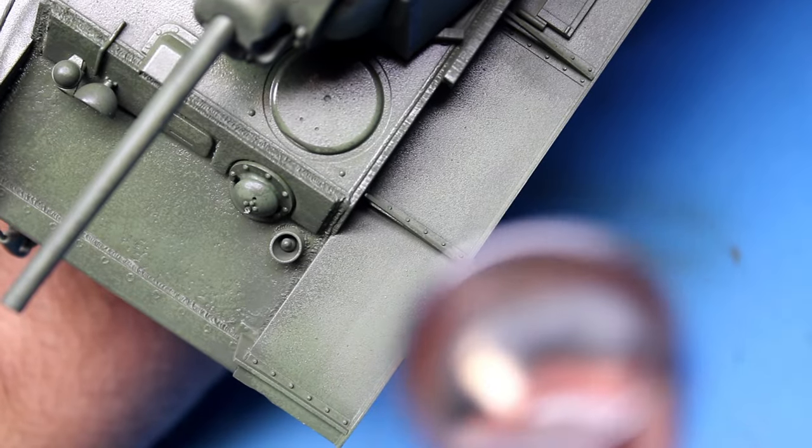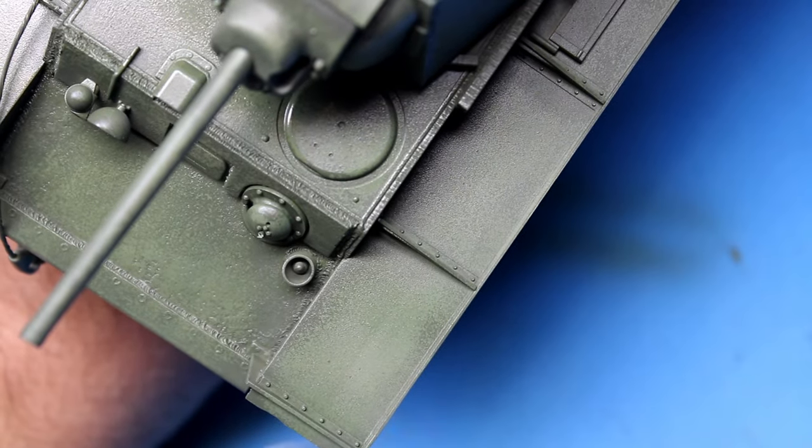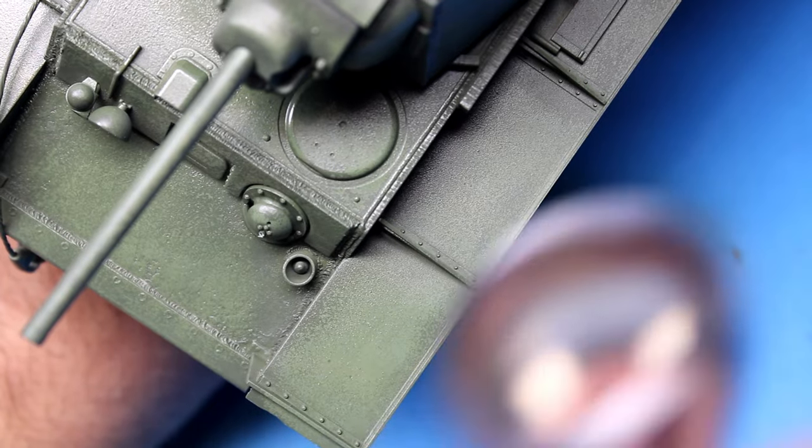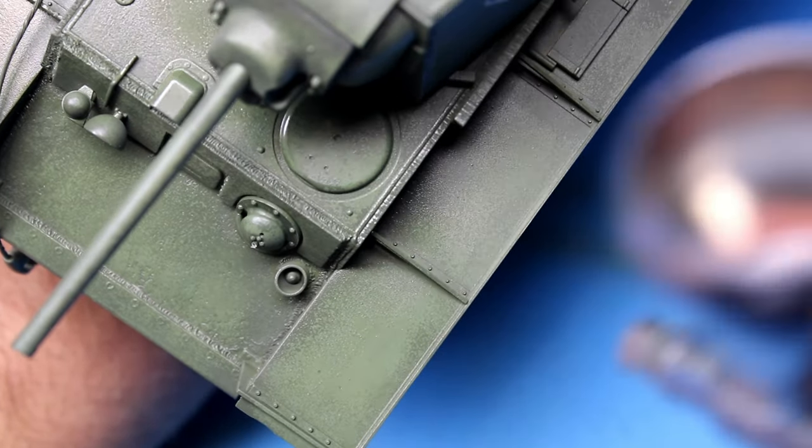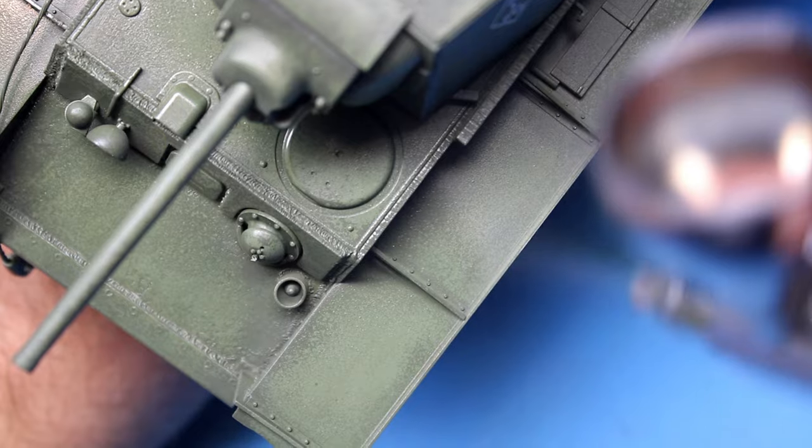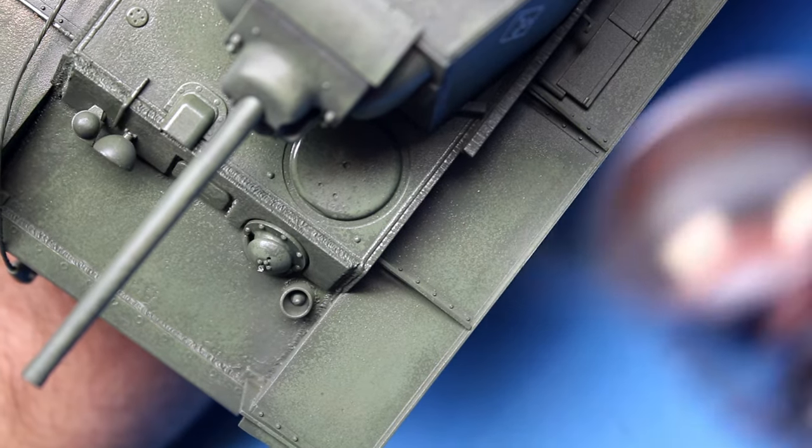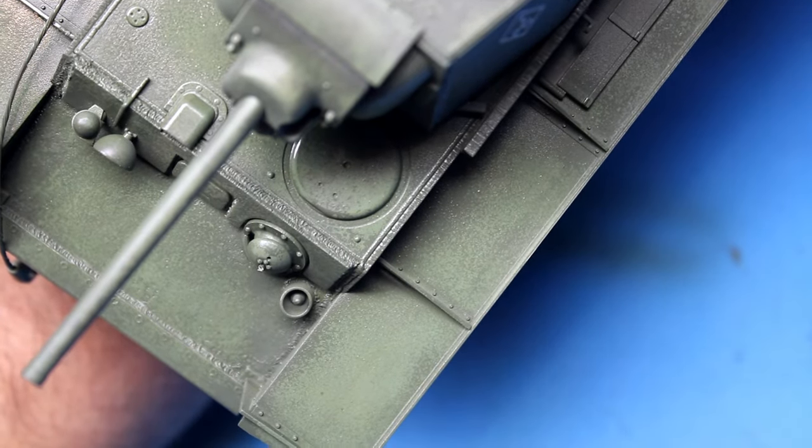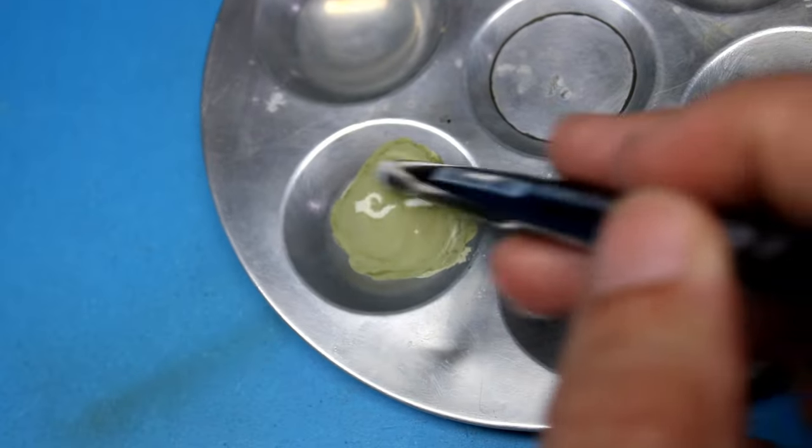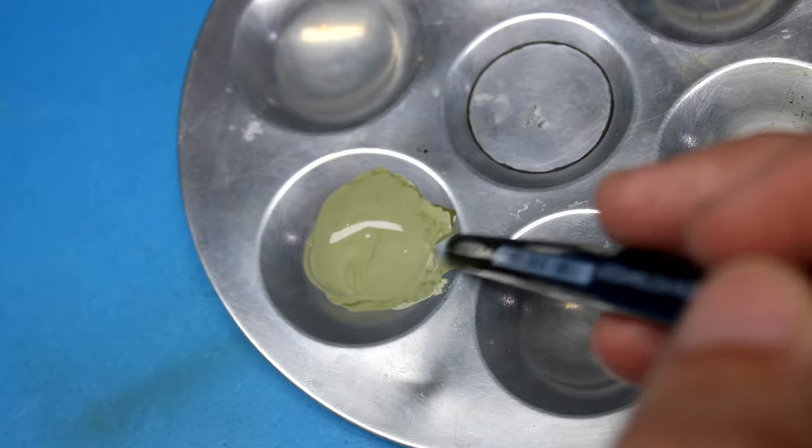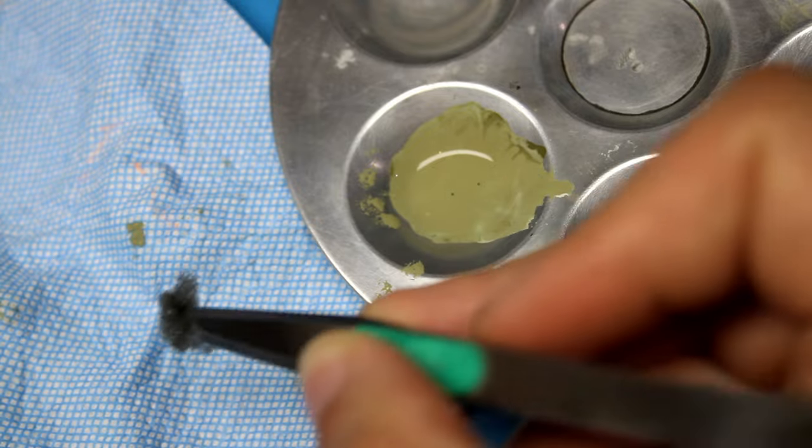Happy with the distressing, and now that the decals are on, I seal everything under two coats of Semi-Gloss Clear. This is going to protect the paint from any following stages. So by using acrylic paint for chips, if I'm not happy, I can just wet the acrylic paint and wipe it away without worrying about damaging the paint underneath.